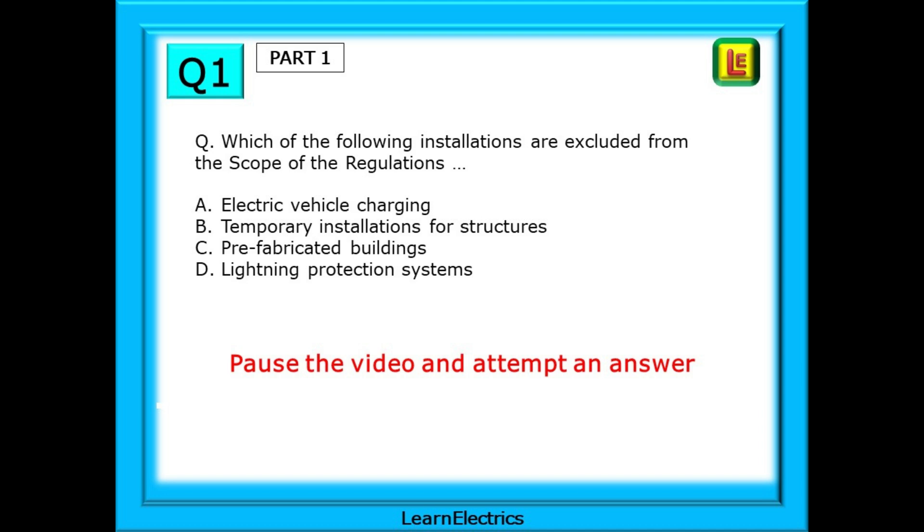The first question asks which of the following installations are excluded from the scope of the regulations and then four possible answers. We know that this answer will be in part 1 of the book. Pause the video and attempt an answer.